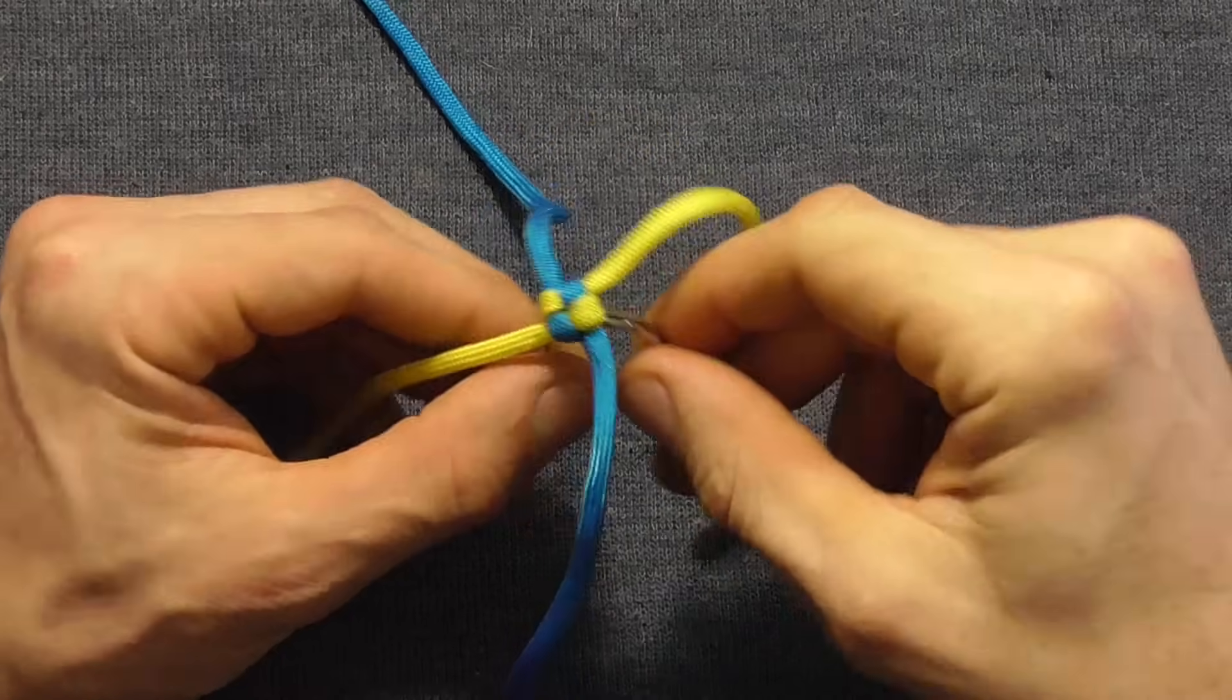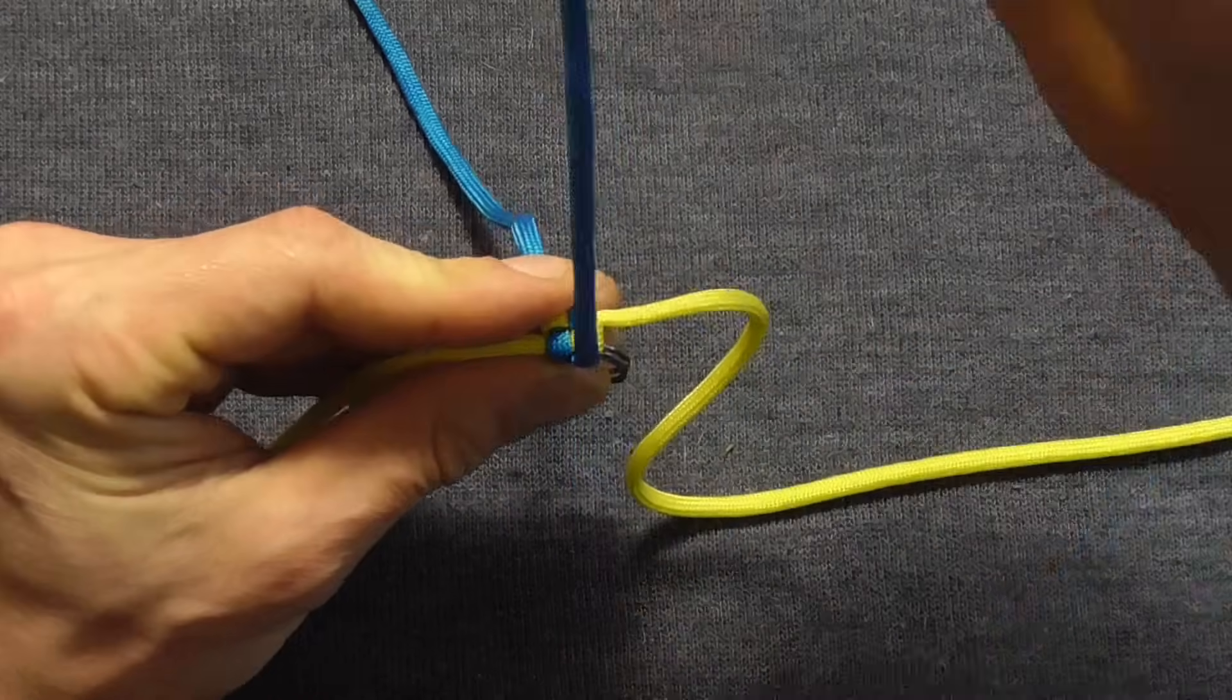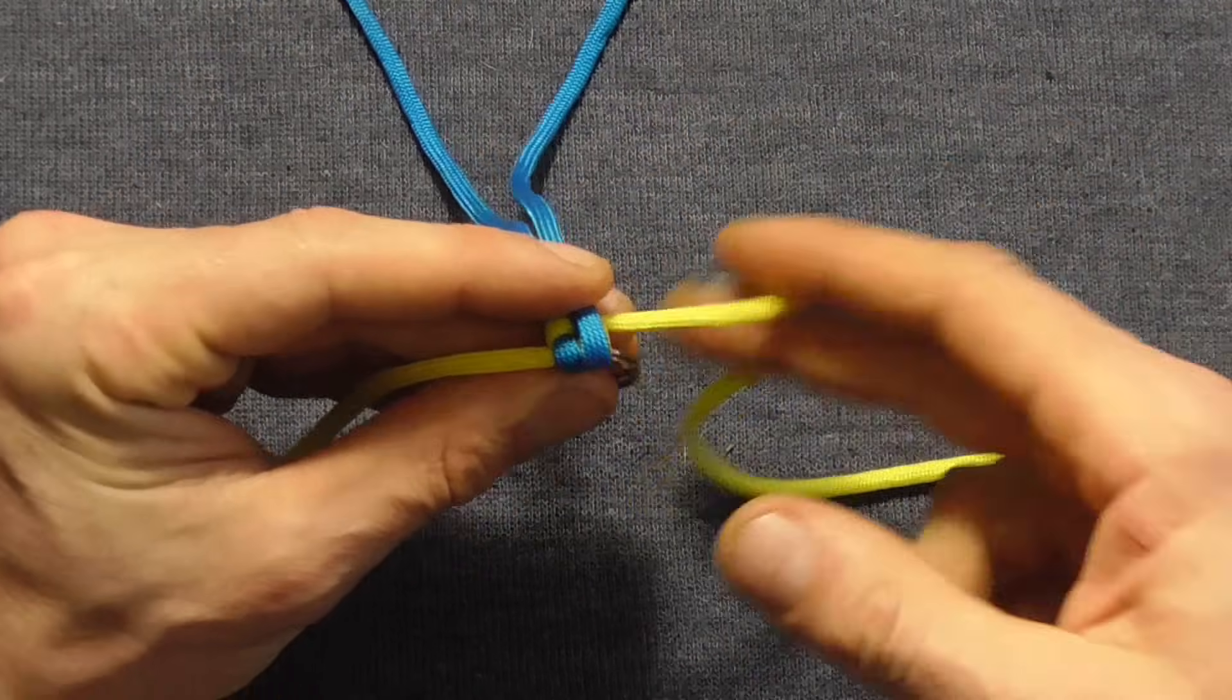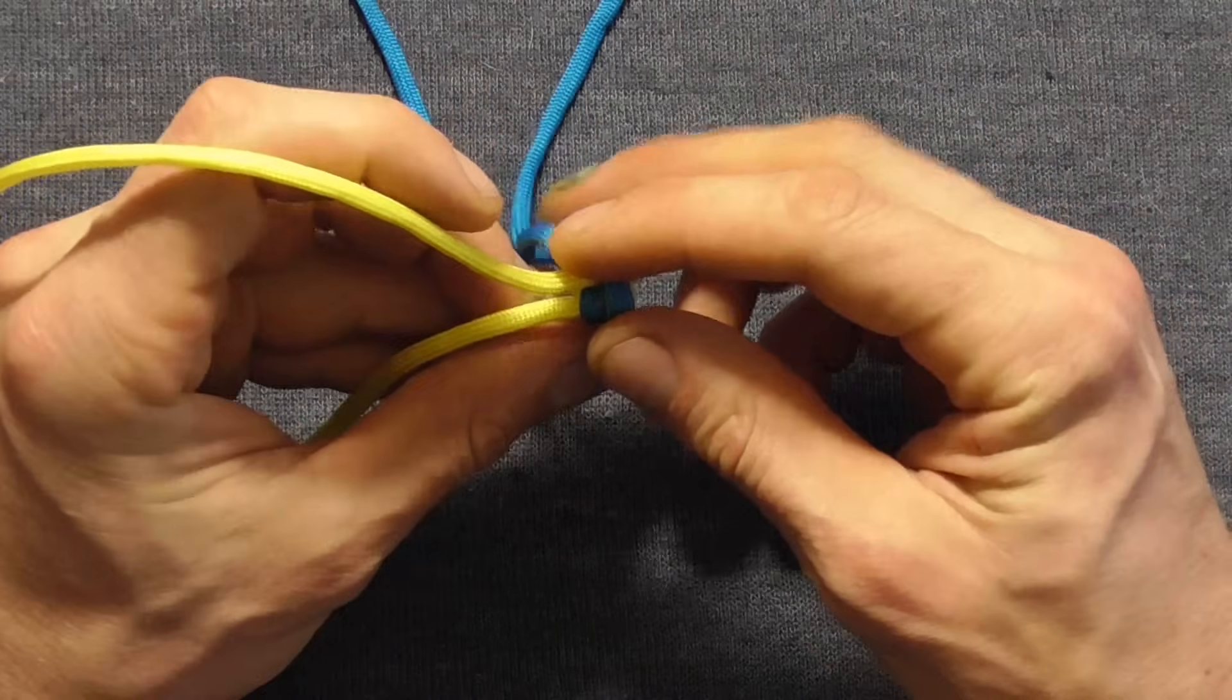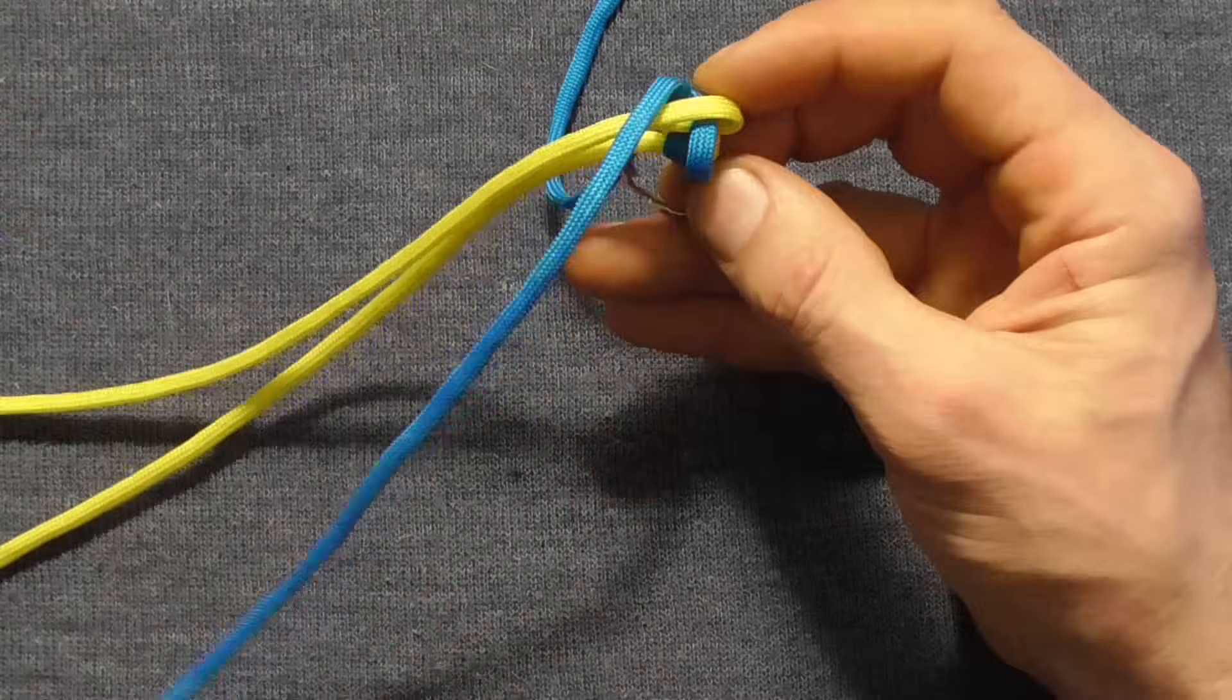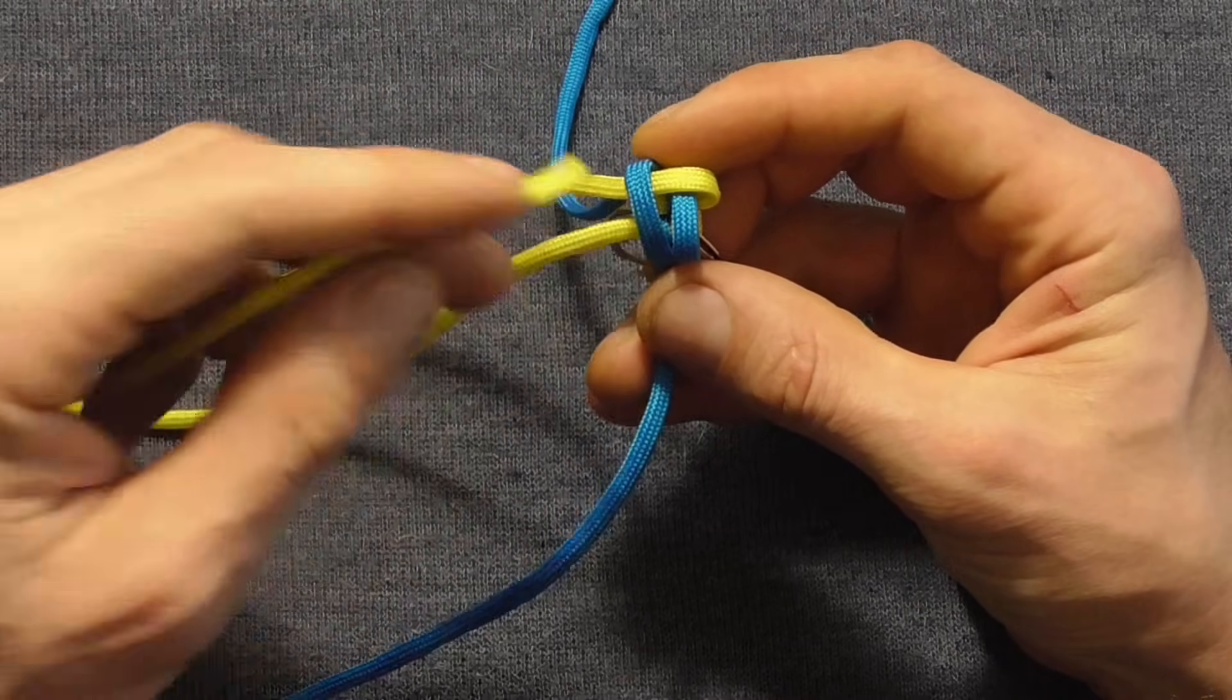So once we have this bottom keyring set we're just going to repeat the same pattern. Again, starting at the bottom here, I'm going to bring that up, and running anti-clockwise this time, I'm going to bring that right hand strand across, top strand down, and then this bottom strand over, and then under that one.